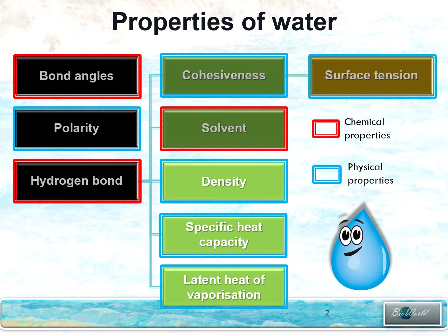So in today's video I'm going to talk about three more physical properties, which are density, specific heat capacity, and latent heat of vaporization. We'll start off with density.